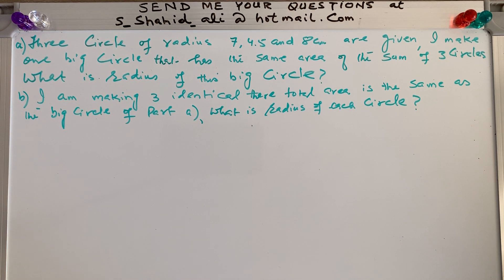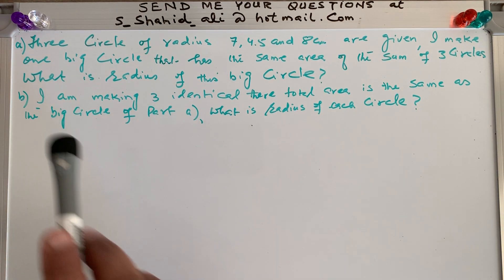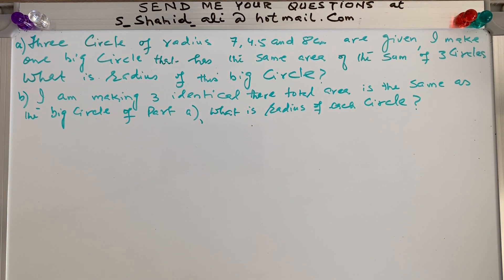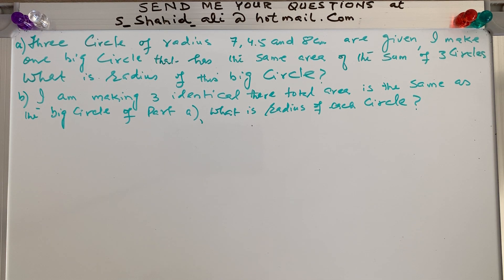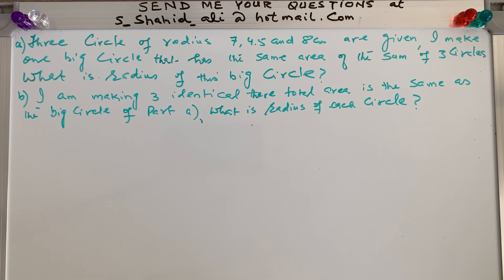Bismillah, welcome to my channel Learn Math with Sayyad Ali. Here is the assignment question: three circles of radius 7, 4.5, and 8 centimeters are given. I make one big circle that has the same area as the sum of the three circles. What is the radius of this big circle? This is part A. Part B: I am making three identical circles whose total area is the same as the big circle from part A.